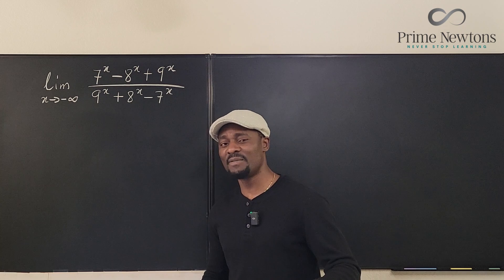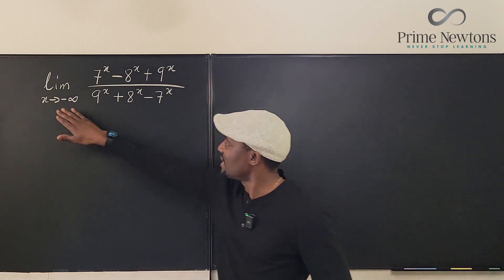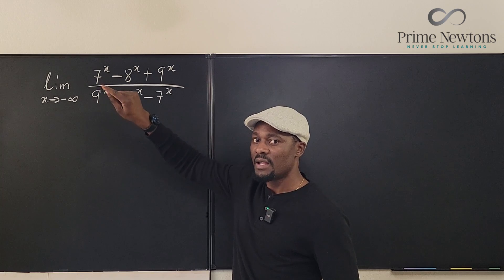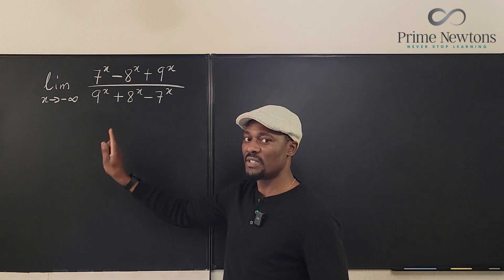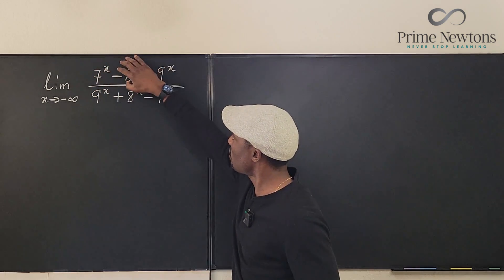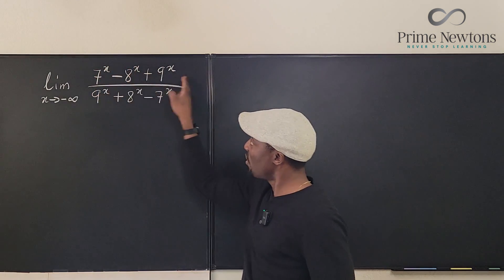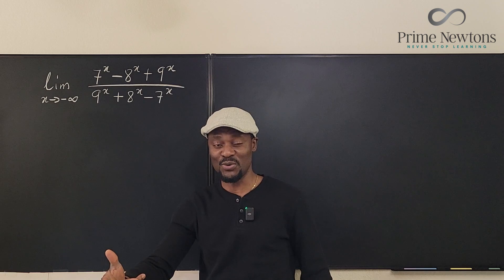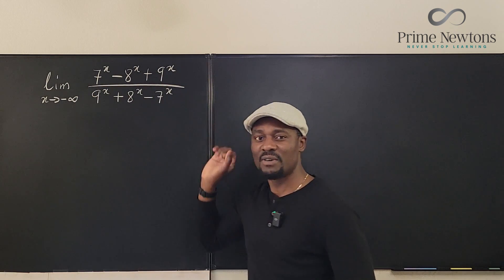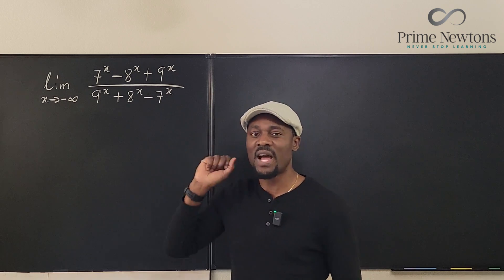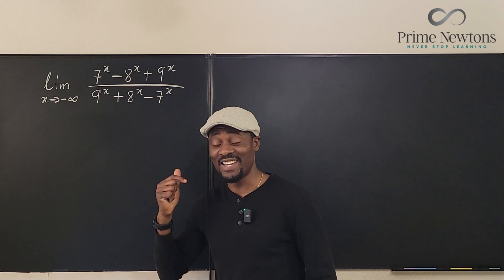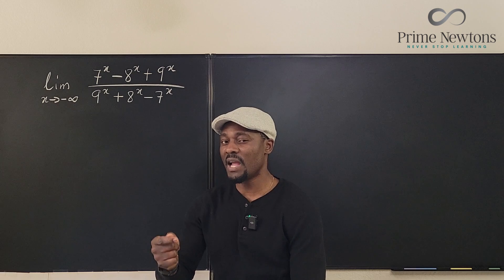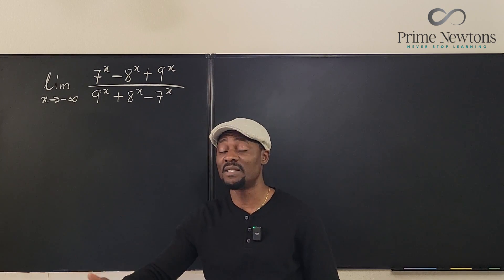Let's look at this closely. x is approaching negative infinity, so 7 raised to negative infinity is 1 over 7 to infinity, which goes to 0. Everything goes to 0, so this is a 0 over 0 situation. For lovers of L'Hôpital's rule, you'd want to take the derivative of the top and bottom — but go ahead and try it. It's going to get very messy and the mess will never go away. It's always advisable to clean up your algebra rather than rush to L'Hôpital's rule.